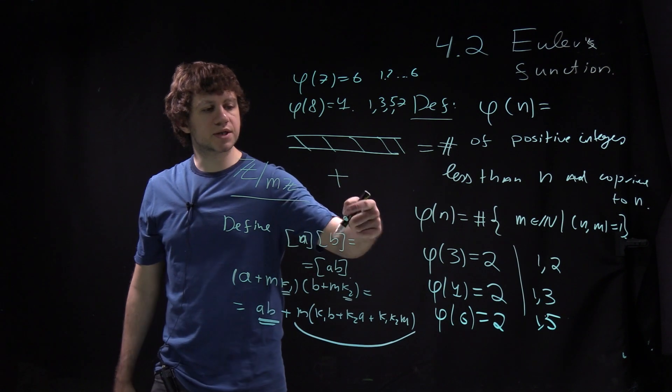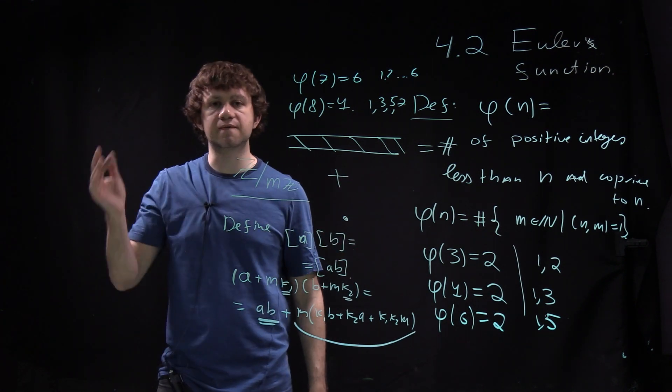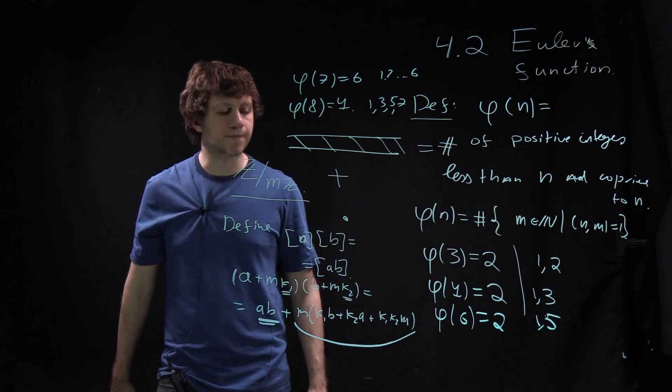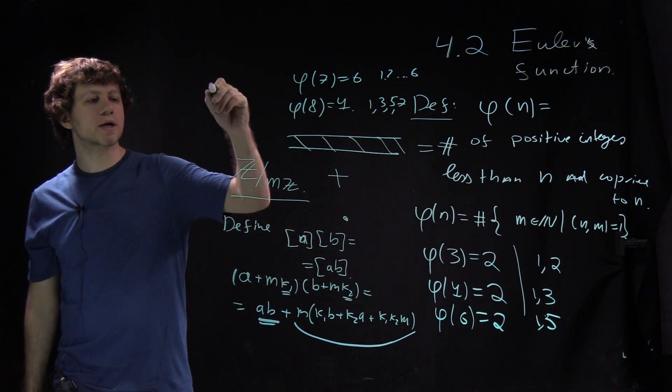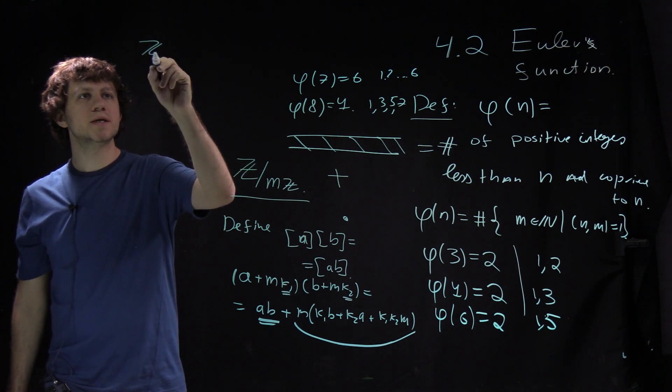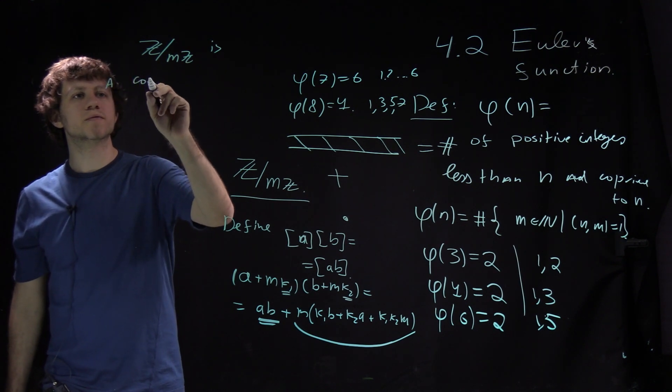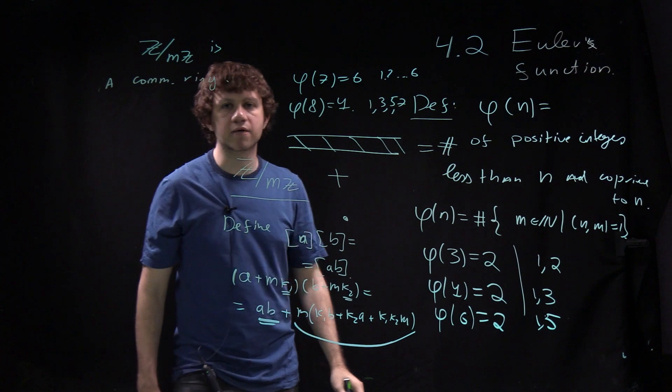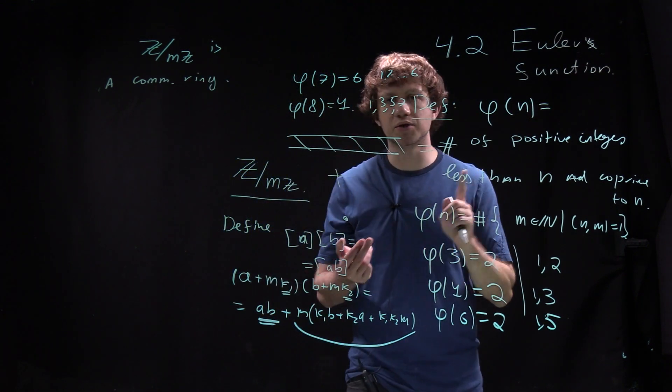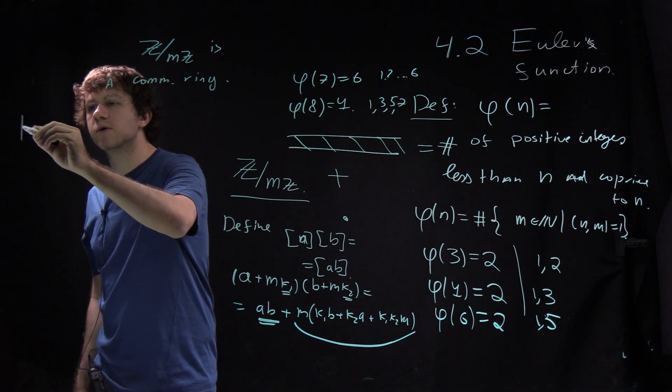These two operations satisfy certain axioms, the axioms of a commutative ring. So Z over mZ is a commutative ring. Commutative ring is the same kind of algebraic structure as fields and groups. Let me quickly say what it is.